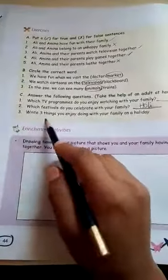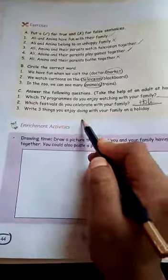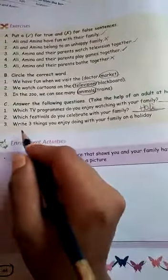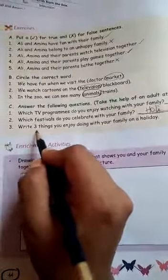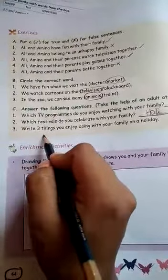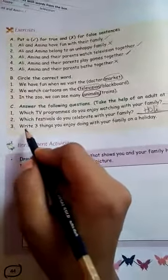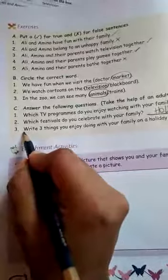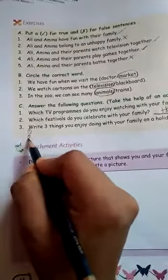Now write three things you enjoy doing with your family on a holiday. So how do you spend with your family on a holiday? For example, I spend my time with my family members by going to zoo or playing games with them. So how do you enjoy? You just write three points here, one, two and three.